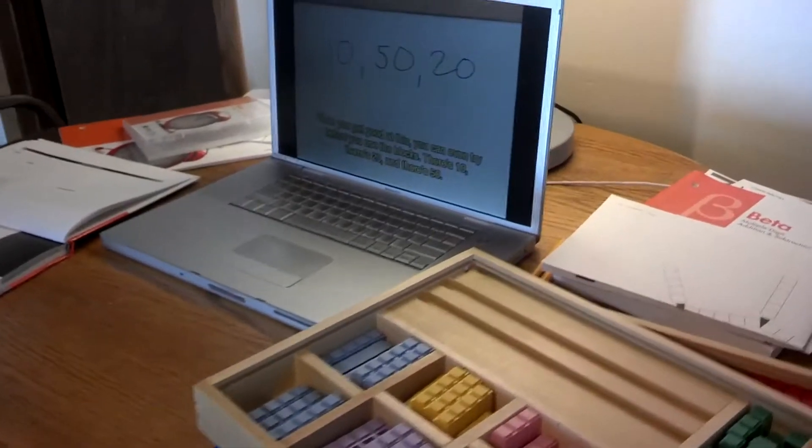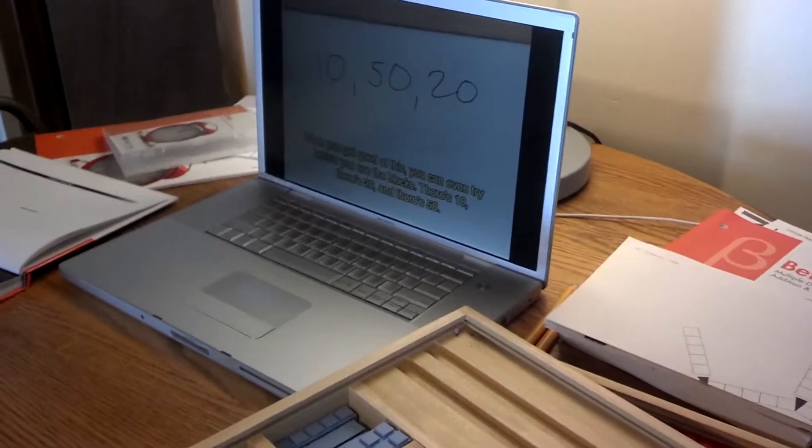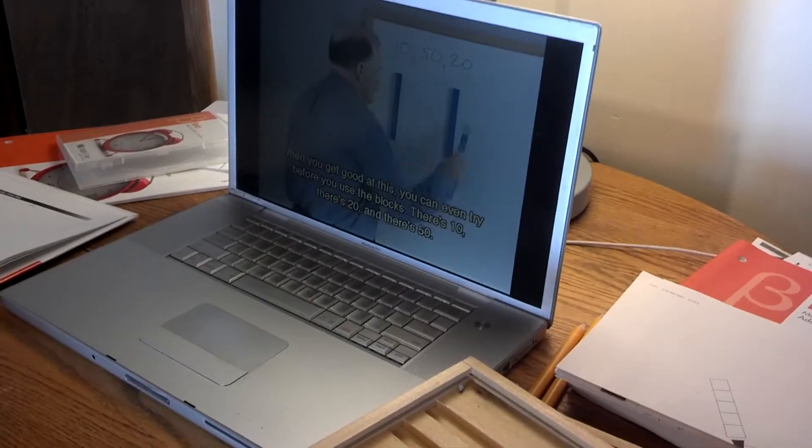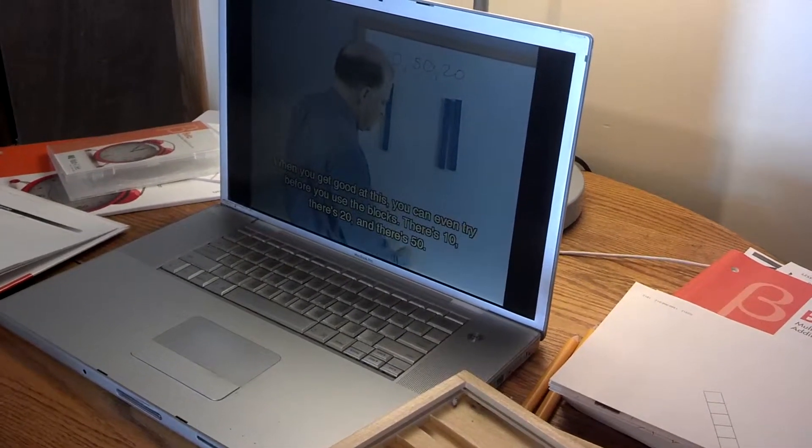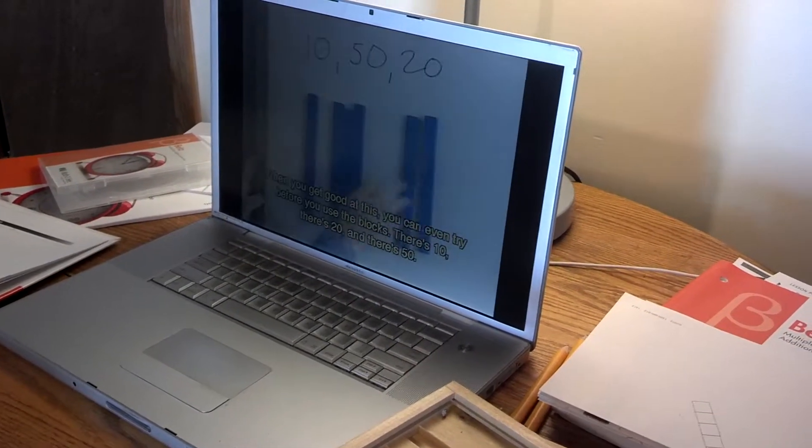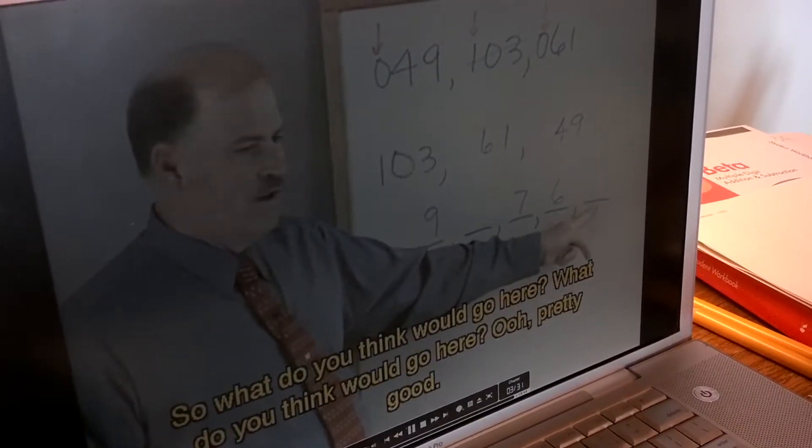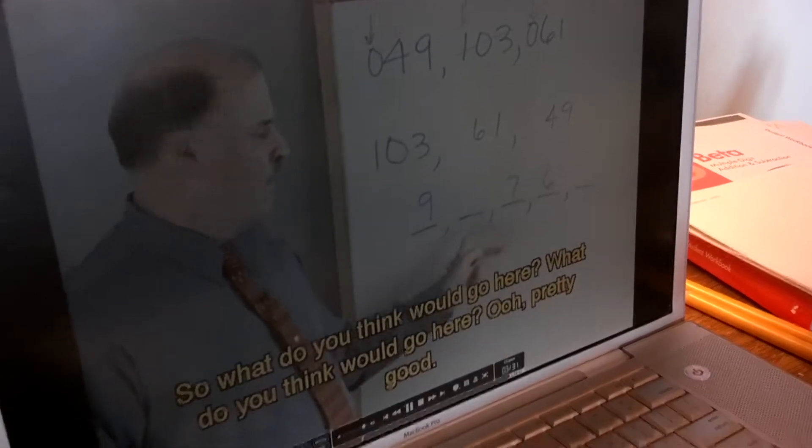When you get good at this, you can even try before you use the blocks. There's 10, there's 20, and there's 50. One each time. So what do you think would go here? Five. What do you think would go here? Eight.